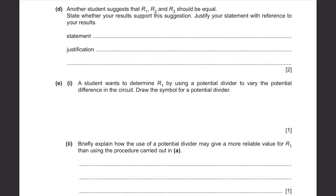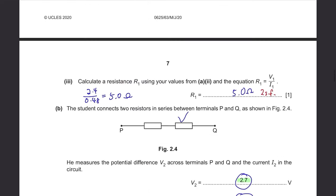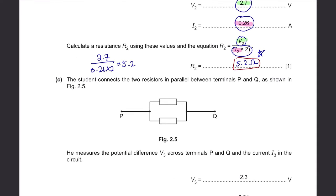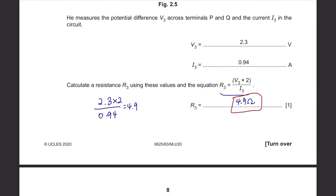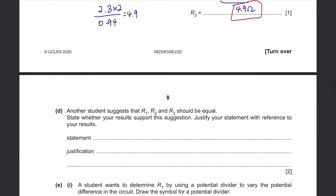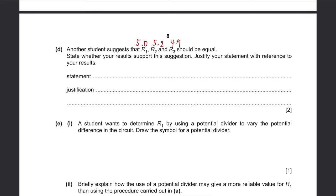Part D: another student suggests that R1, R2, and R3 should all be equal. R1 was 5.0, R2 was 5.2, and R3 was 4.9. These are all within a difference of about 0.1 to 0.2 of each other, so the results do support the suggestion. The justification is that the values of R1, R2, and R3 are all within the limits of experimental accuracy.